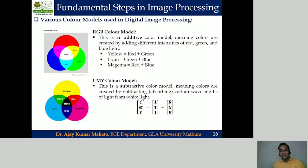In color image processing, as per the curriculum, you have to learn two color models: the RGB color model and the CMY color model. The classification of colors based on color of light: RGB — red, green, and blue components — are considered primary colors, while CMY — cyan, magenta, and yellow — are considered secondary colors. The RGB color model and CMY color model will be discussed in detail in upcoming lectures.